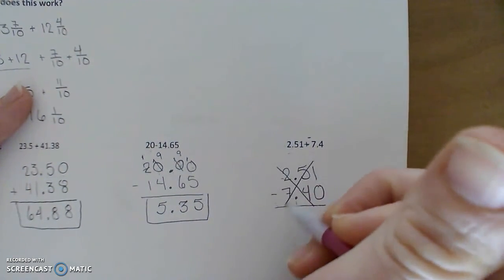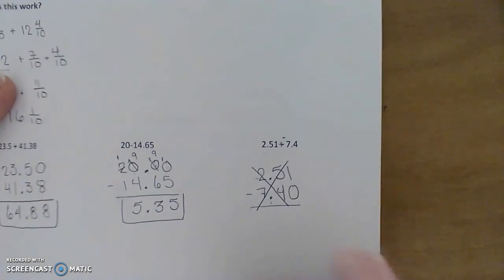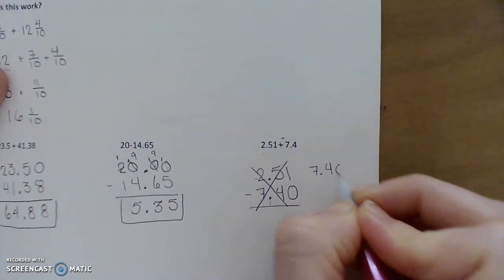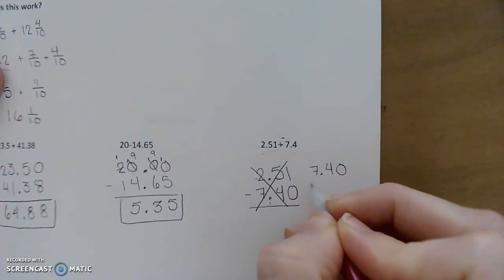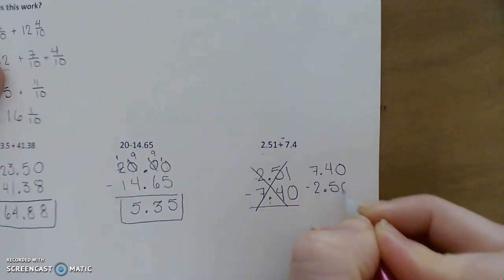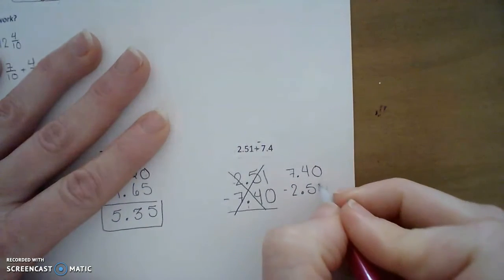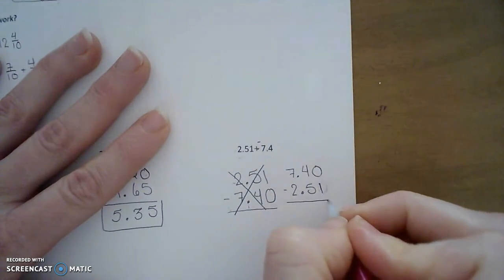And in order to do this subtraction to find the difference of these two numbers, you really want to put the larger absolute value on top and the smaller absolute value on bottom. So we're going to subtract to find the difference of these two numbers.